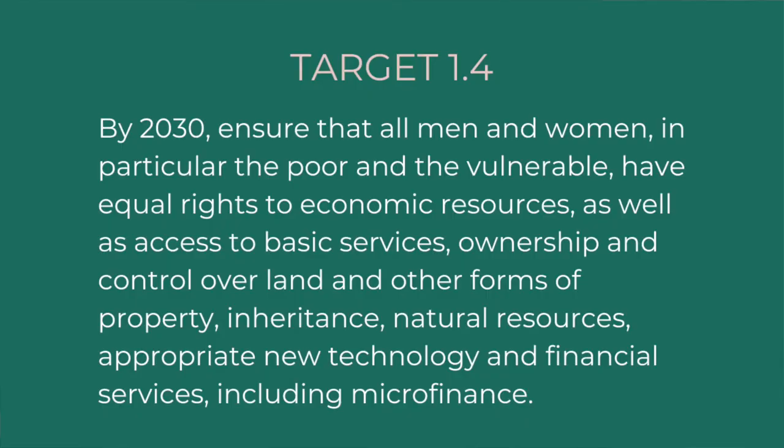Unfortunately, where we stand on this is a little depressing. Only 27% of the world's population has adequate social protection, and only 22% of the world's unemployed workers have unemployment insurance. We've seen this very clearly with COVID — how many people were left in vulnerable positions because they did not have adequate social protection. This is a huge priority of the agenda, especially given the context of this year and how important those social safety nets have proven to be.